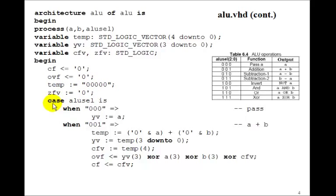And then we'll have the case statement, ALU select. So when the ALU select is 0, we just want to pass A through, so Y variable just gets A.